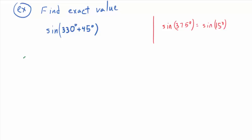Write it down every time you use it until you have it memorized. The sine sum identity goes sine, cosine, sine, cosine — that's the template. Fill it in: sine of 330 cosine of 45 plus sine of 45 cosine of 330. Alpha is 330, beta is 45, and the angles switch around in the second term. Now find each value and replace it.